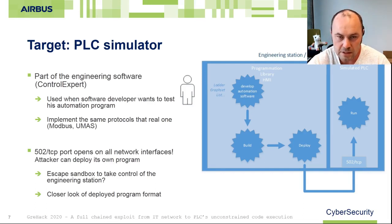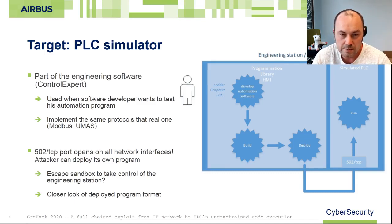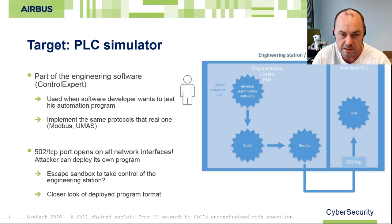The classical way to use the simulated PLC: the software developer designs his automation program using ladder language, compiles it, then deploys it on the simulated PLC using Control Expert. To achieve that, Control Expert sends the automation program using a TCP connection on the Modbus port which is 502. Then a run request is made on the simulated PLC and finally the automation program is executed periodically. This feature is quite interesting from an attacker's point of view because it can give the possibility to execute something on the engineering station, and the good news is that the simulated PLC listens on all network interfaces on TCP port 502.